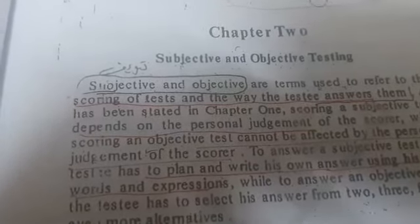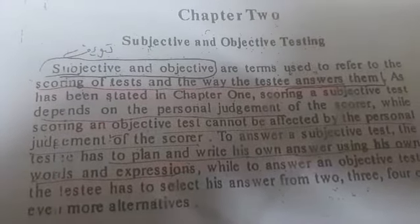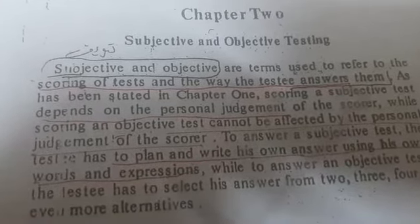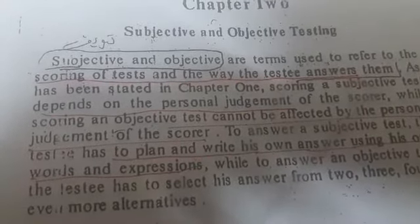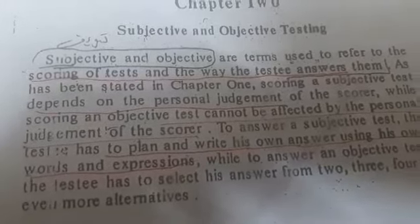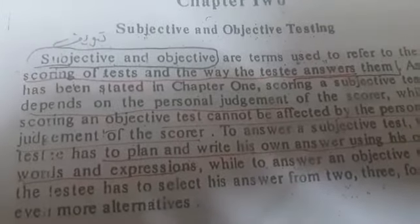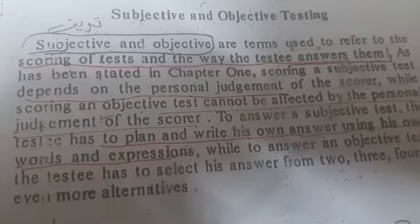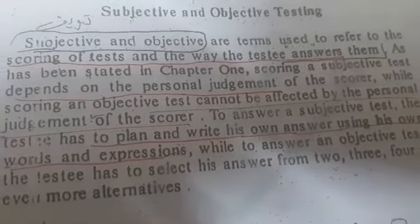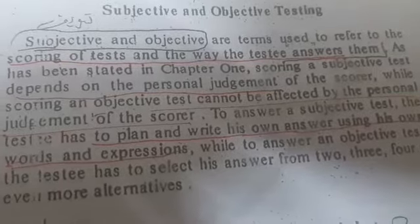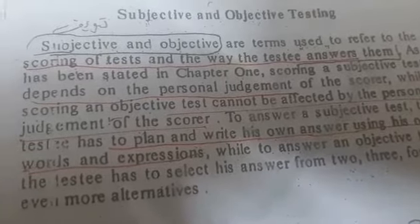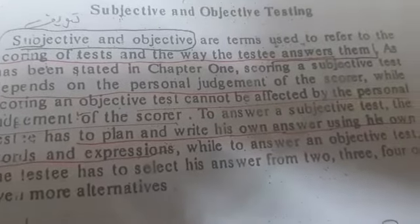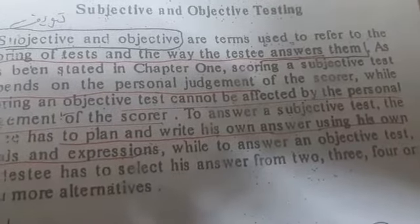محاضرة اختبارات المرحلة الرابعة صباحي مسائي — Subjective and Objective Testing. الاختبارات الموضوعية والكتابية. Subjective and Objective Test are terms used to refer to the scoring of tests and the way the testee answers them.